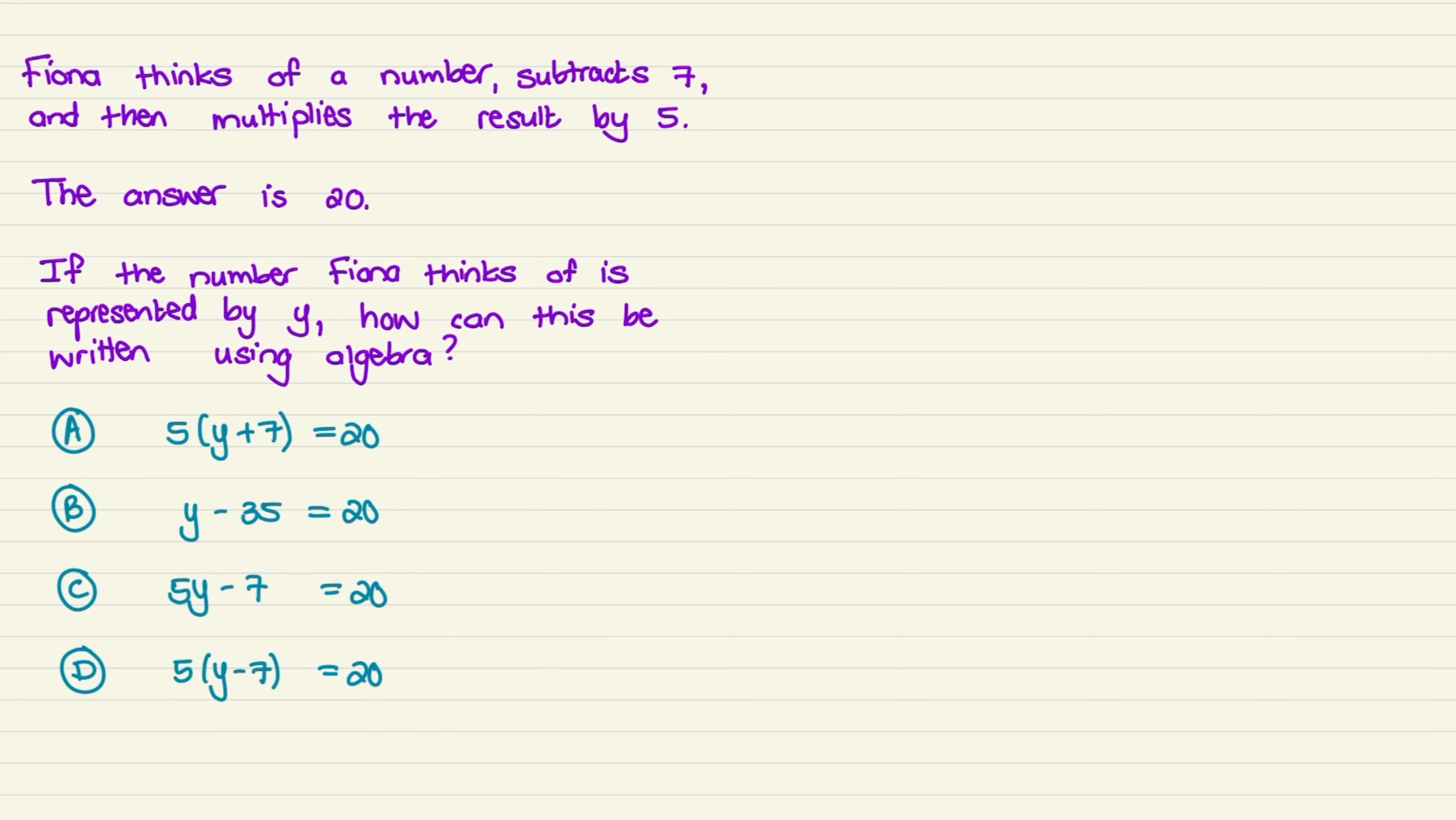So let us look at the solution. The question says Fiona thinks of a number, and that number that she's thinking about is represented by y. So we have y, and y is a variable. A variable is a letter that we use in the place of a number.